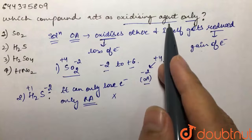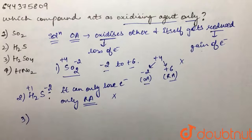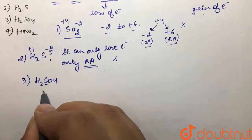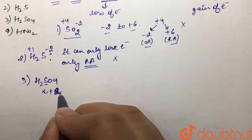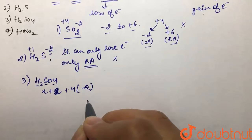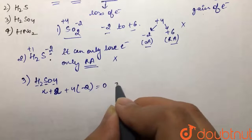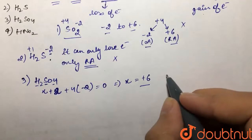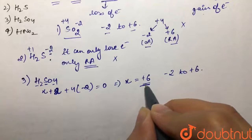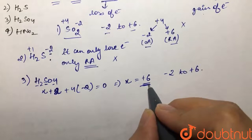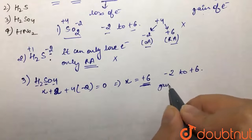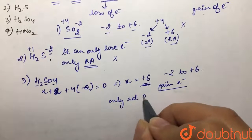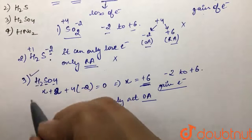Moving to the third option, H₂SO₄: let the oxidation state of sulfur be x. We have +2 for 2 hydrogens and -2 for each of the 4 oxygens, giving x = 8 - 2 = +6. Possible oxidation states of sulfur are -2 to +6, and sulfur is already at +6, so it cannot further lose electrons — it will only gain electrons, meaning it reduces itself and can only oxidize others. So H₂SO₄ acts as oxidizing agent only. This is our correct option.